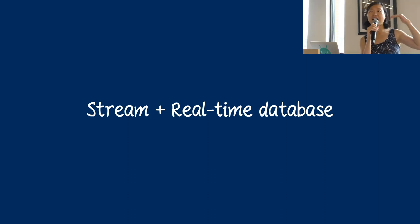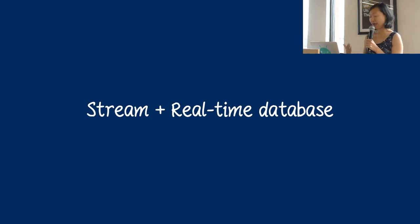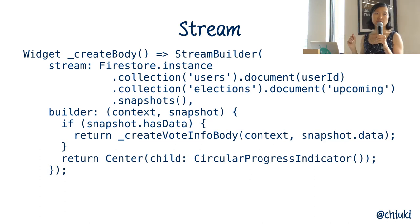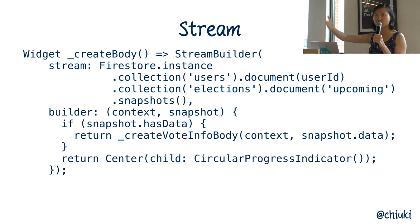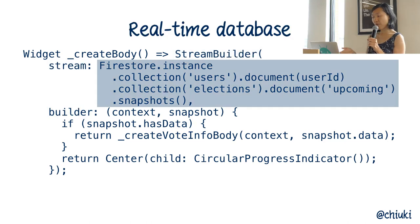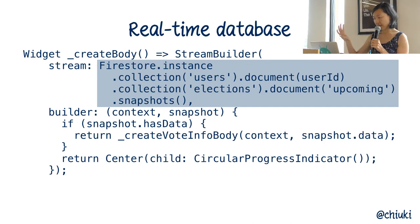The way the app watches the upcoming elections location uses a stream. Essentially it's a stream of data that keeps coming in — you can think of it as events. Every time the document changes, I call the stream builder: watch this stream, and whenever it changes, use this builder to update the UI. What I'm watching is a Firebase real-time database at the same location — user, user ID, elections upcoming.